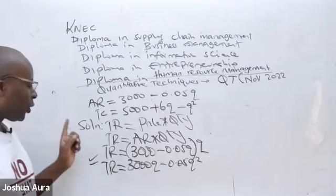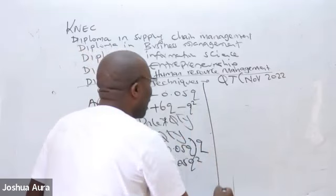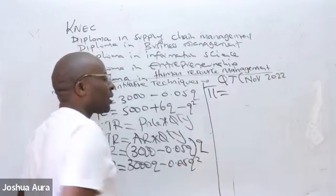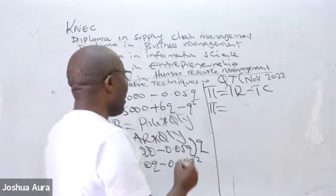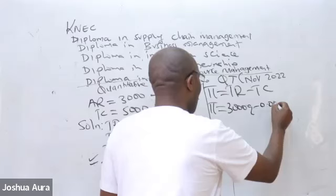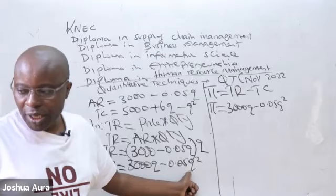So having gotten total revenue, number two, they want us in this case to give them that profit. Profit is abbreviated like that. How do we get profit? To get profit, we normally take total revenue minus total cost. So my profit here will be equal to total revenue that I happen to be having here, which is 3,000Q minus 0.05Q squared, minus the cost. And the cost has been provided here.